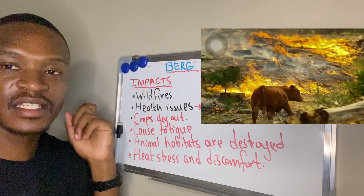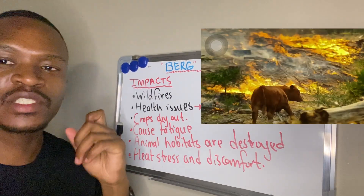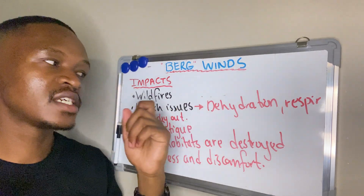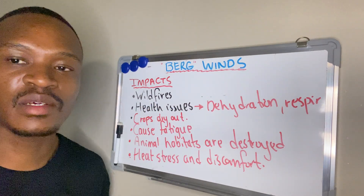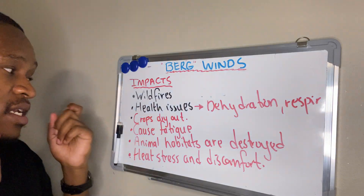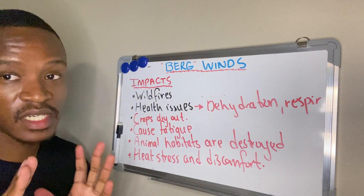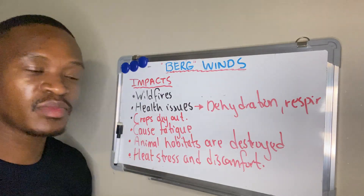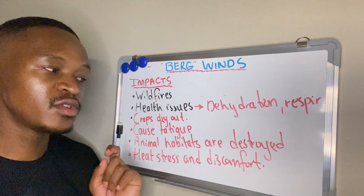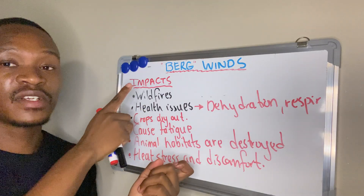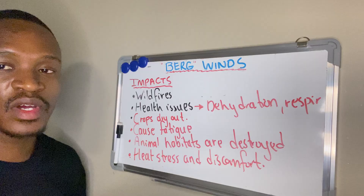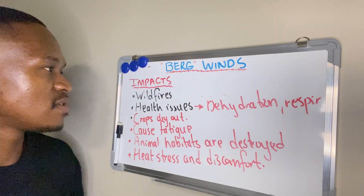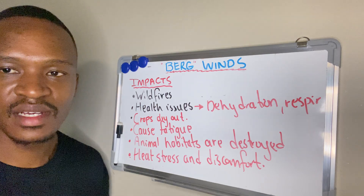These are some of the impacts of berg winds. They can lead to wildfires — uncontrollable fires that spread across forests, especially in dry areas. They can lead to health issues such as dehydration and respiratory problems, especially for people with asthma. They can cause crops to dry out, fatigue especially among the elderly, and animal habitats can be destroyed due to wildfires.